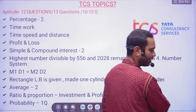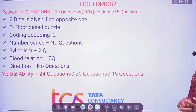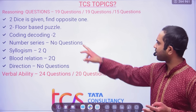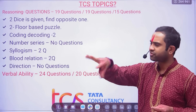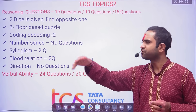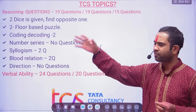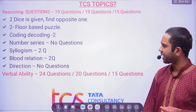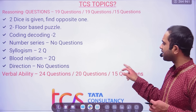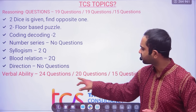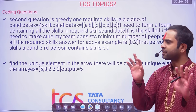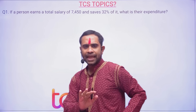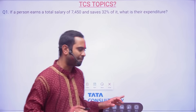For reasoning, there were floor-based puzzle questions (Dais questions). We gave continuous three to four classes on puzzles. Yesterday in the live session I covered coding-decoding, number series, symbolism, blood relation, and direction. Some students in the first shift did many reasoning questions but in the second shift they were not able to do as many.